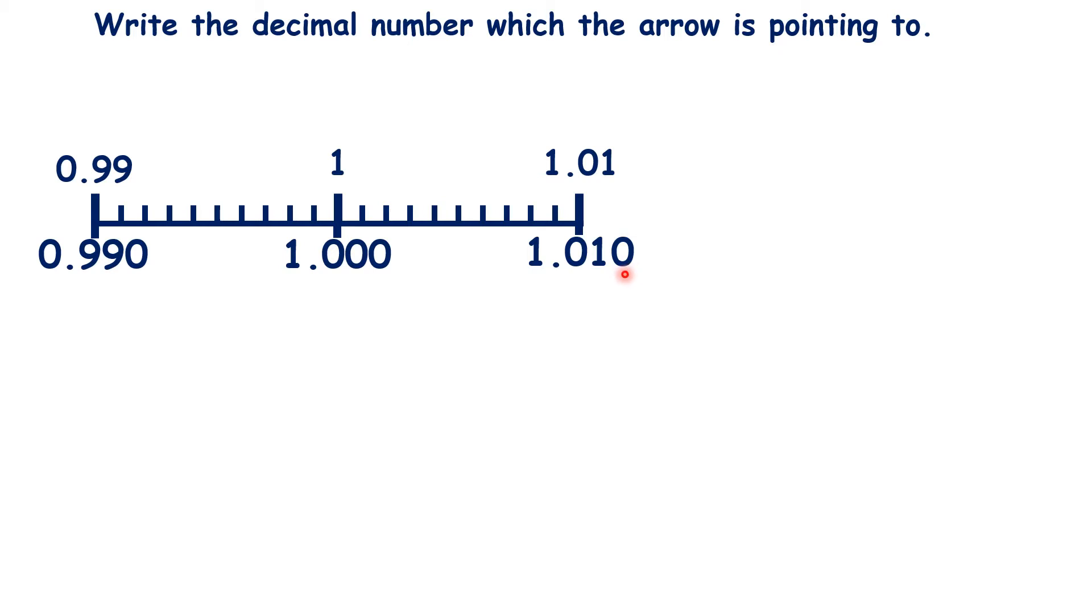Remember, putting zeros on the end of a decimal doesn't change the number, so we haven't changed the numbers here, we've just written them in a different way.